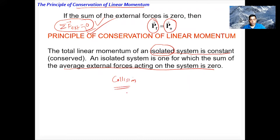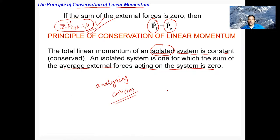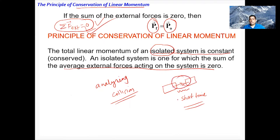What is a collision? A collision occurs when two or more objects come close together or hit each other and exert forces on each other for a short time. During the collision, internal forces cancel each other out, and since the contact happens for a very short time, linear momentum is always conserved.